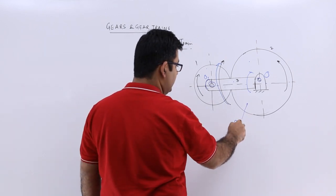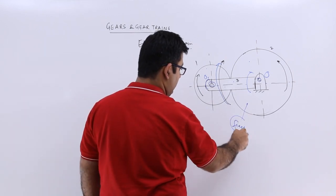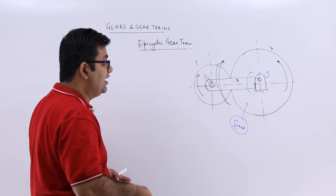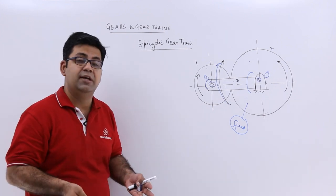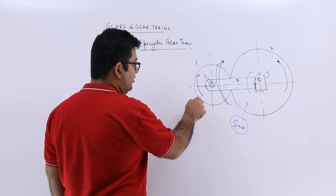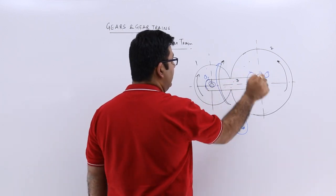Gear 2 is a fixed gear. You cannot have this. So there are certain limitations as well. So you have to recognize which configuration is possible, which is not. So in this case, you cannot fix gear 1, but you can fix arm 3 and gear 2.